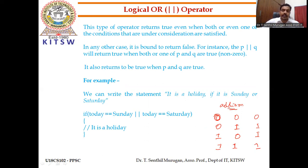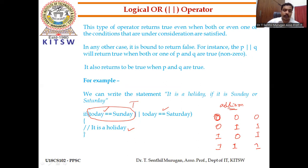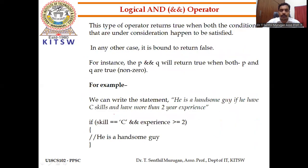Real-world example for OR: today equals Sunday OR today equals Saturday — if either condition is met, it is a holiday. Any one condition being true is sufficient. If both conditions are false, the result is false (0) and the statement won't execute.